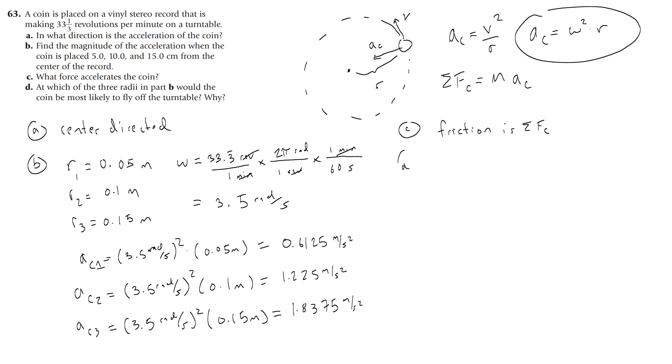And D is asking you to say which of the three radii would the coin be most likely to fly off the turntable.